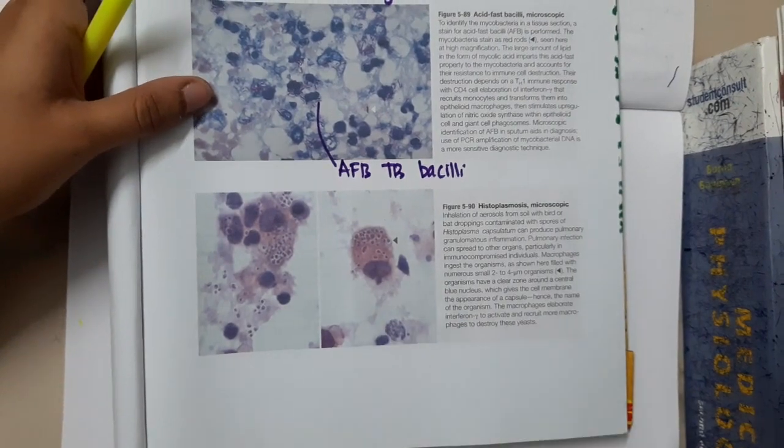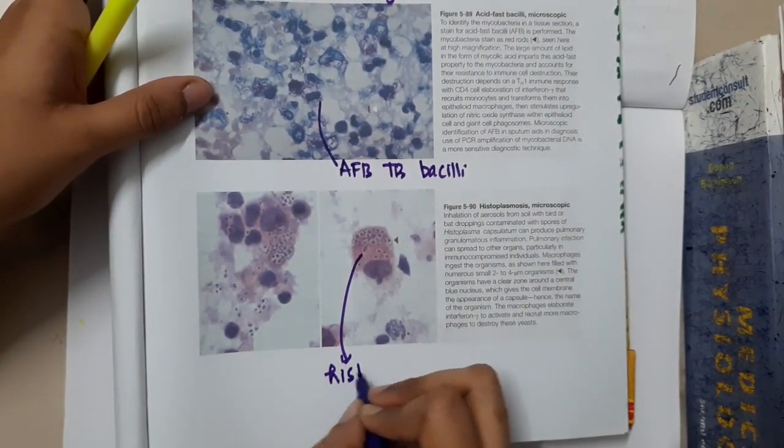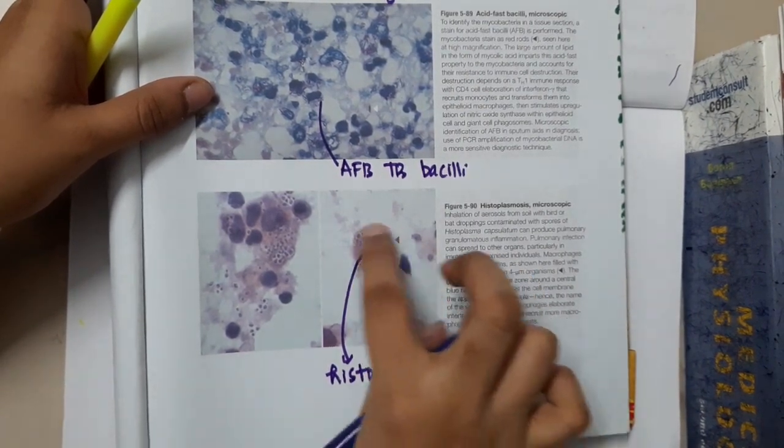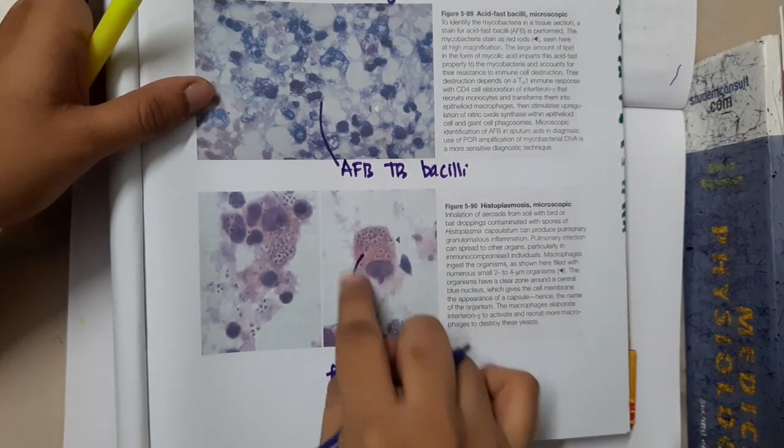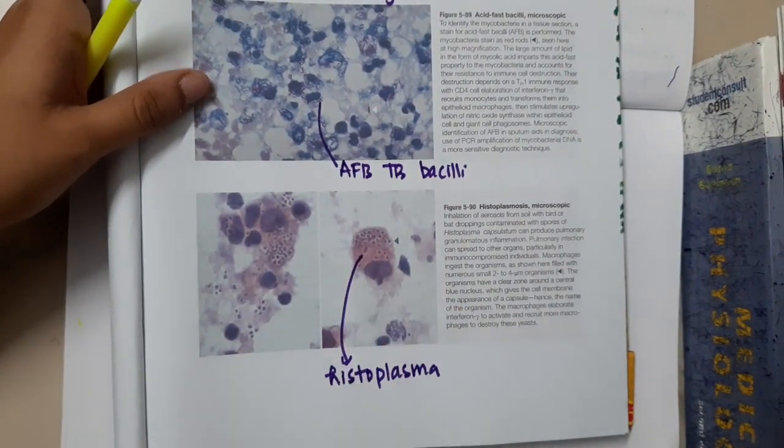This is the picture of histoplasmosis. This is histoplasma species which is shown in the macrophages. This is a macrophage. In the macrophage you can see the histoplasma cells which are seen.